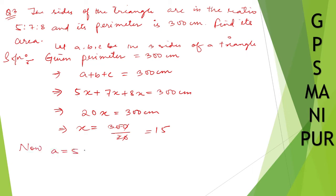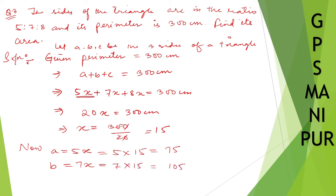Now a equals 5x, so a equals 5 into 15 which is 75. b equals 7x, so b equals 7 into 15 which is 105. And c equals 8x, so c equals 8 into 15 which is 120. We have got a, b, c.